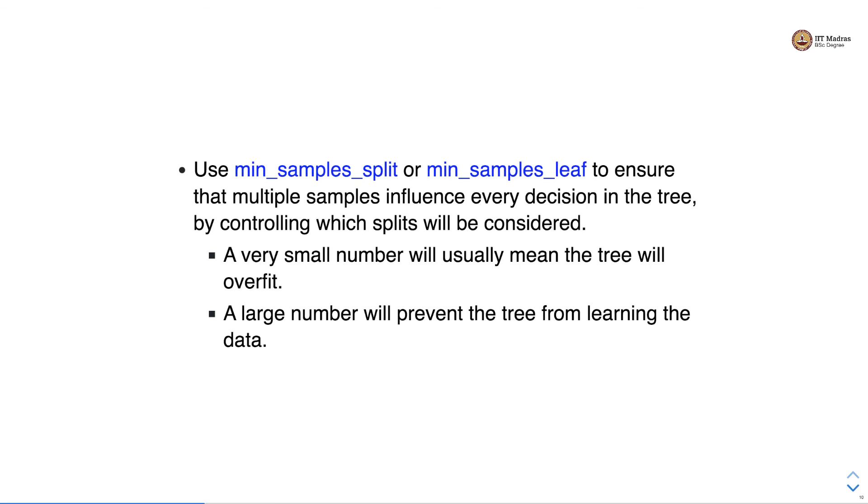Finally, use min_samples_split or min_samples_leaf to ensure that multiple samples influence every decision in the tree by controlling which splits will be considered. A very small value will usually mean that the tree will overfit. On the other hand, a large number will prevent the tree from learning from the data.